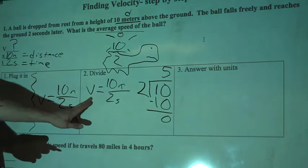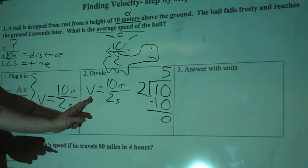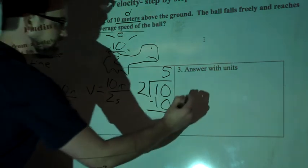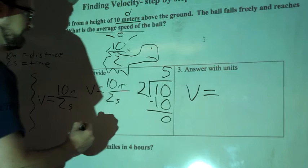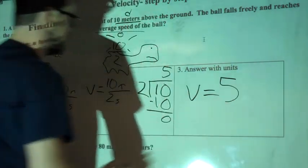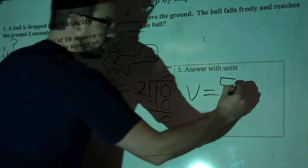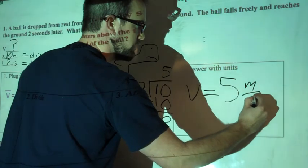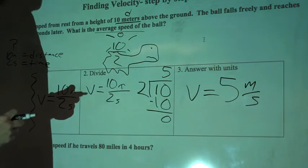My final answer is 5. I was solving for the variable v. So I've got v equals 5. And this was meters over seconds, so we'll keep this as meters per second. And that's my final answer with units.